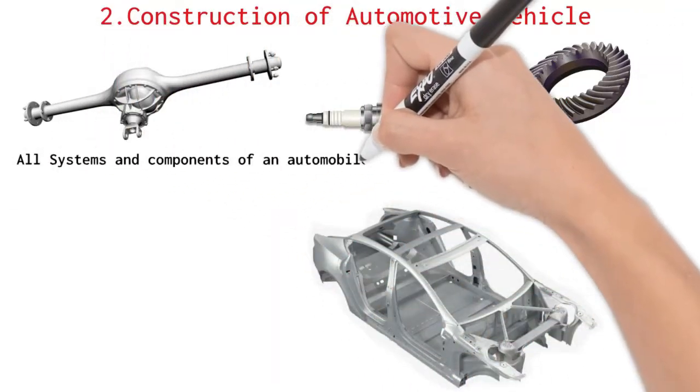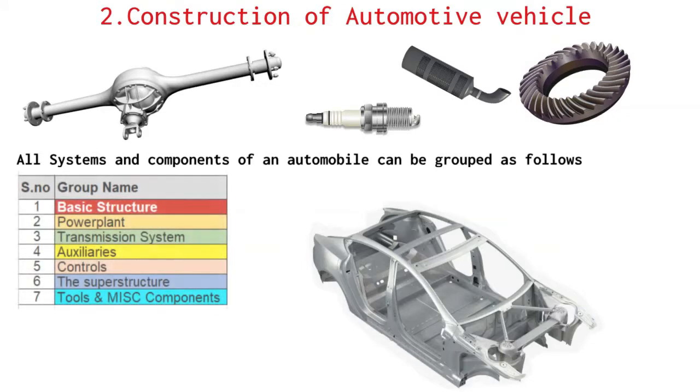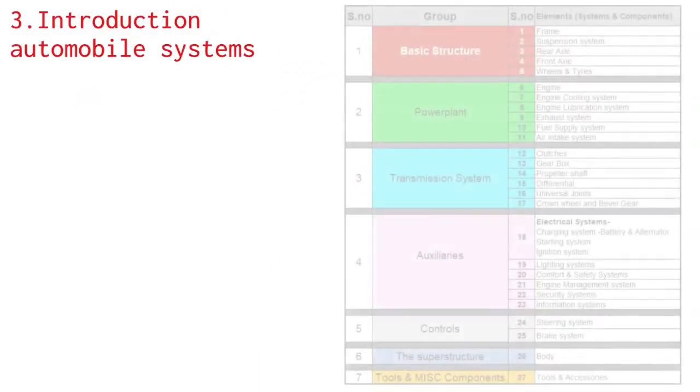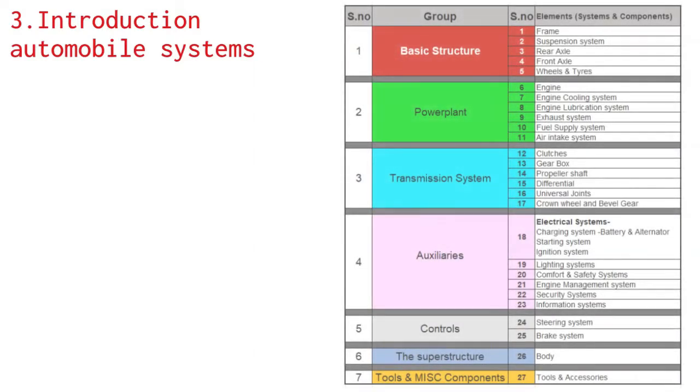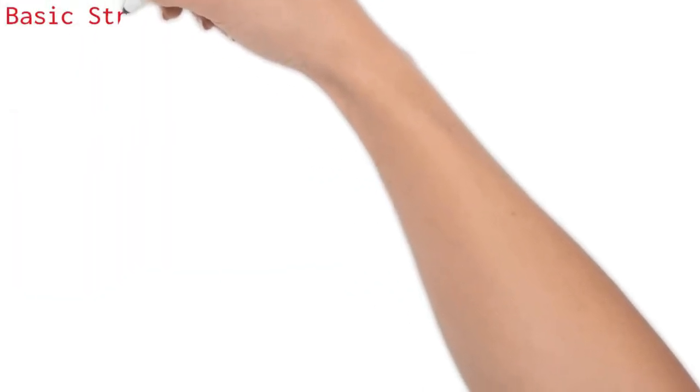All systems and components of an automobile can be grouped as follows: the basic structure, the power plant, the transmission system, the auxiliaries, the controls, the superstructure, tools and miscellaneous components. Introduction to automobile systems. All systems found in automobile are mapped against the groups discussed during the prior topic. Ahead in this video, we will be getting brief understanding over the various automobile constructing groups and their systems.